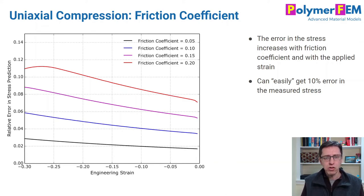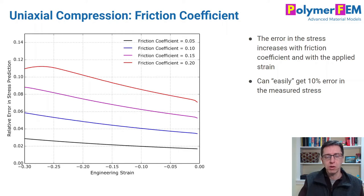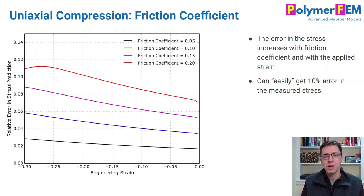The challenge, of course, is that it's really hard to determine what the friction coefficient is in a real experiment. If you take a specimen — a polymer — put it in your test machine and compress it, how do you know what the friction coefficient is? It's not that easy.